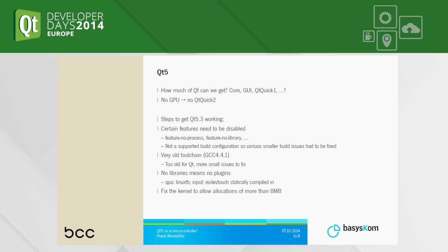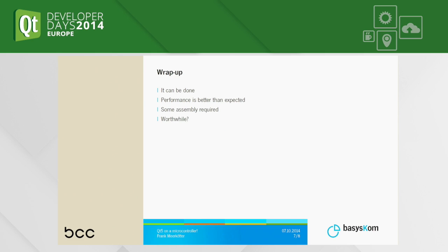With that we could run our first QWidget-based demos. We then moved very quickly to Qt Quick 1, when we figured out that the kernel of that device was set up in a way that you could only allocate 8 megabytes at a time, which is something you quickly get over when using Qt Quick 1. So we had to fix the kernel a little bit. Apart from that, we were good to go. We could run our demos — QWidget-based and Qt Quick 1-based. The wrap-up to that story is: it can be done. The performance was better than expected, actually. We were quite surprised.